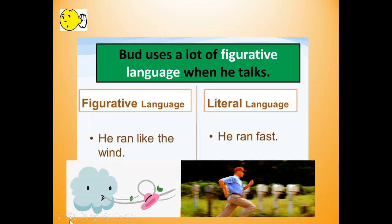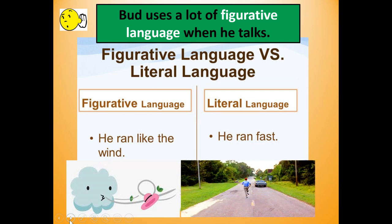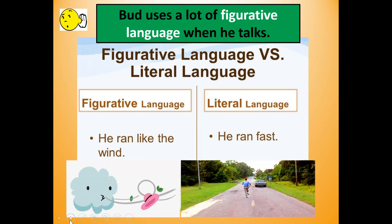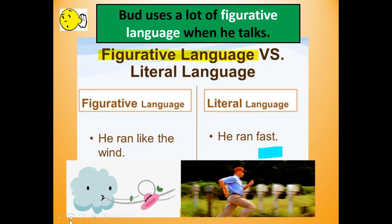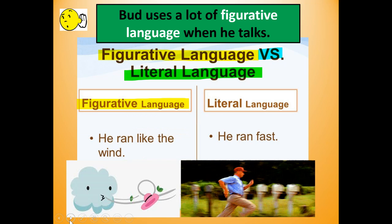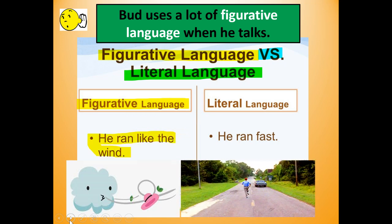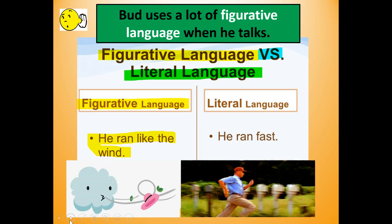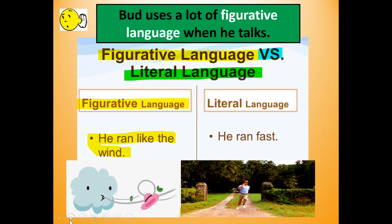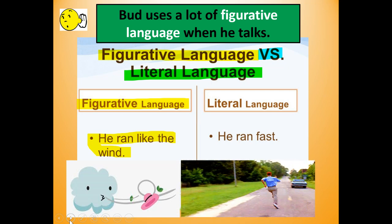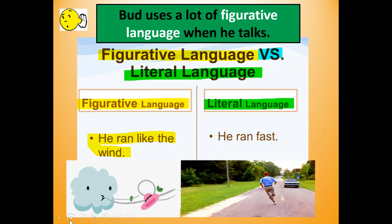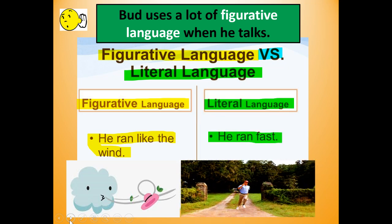In Chapter 7 and the whole book, Bud uses a lot of figurative language when he talks. Figurative language versus literal language — examples: figurative language, if you look at this man, you could say he ran like the wind, meaning they're comparing the way he ran to how the wind is. Literal language would be: he ran fast.